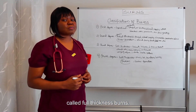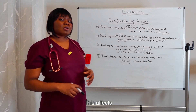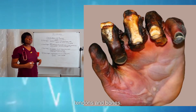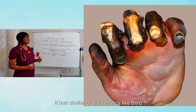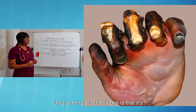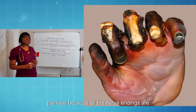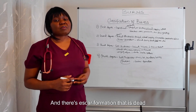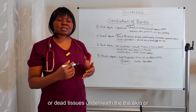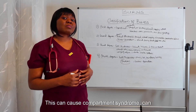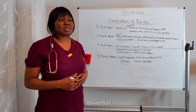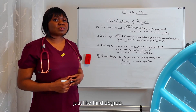Fourth degree burn is also called full thickness burn and is the worst of all. This affects the epidermis, the dermis, the subcutaneous tissue, and even up to muscle, tendons, and bones — very serious. It has similar characteristics to third degree burns: dry, waxy, leathery, and comes in various colors. The unique thing about this one is that it is painless because all the nerve endings are destroyed. There is eschar formation — that is dead skin or dead cells or dead tissues underneath the skin in the area where the injury has occurred. This can cause compartment syndrome and pressure in that area, so they may need surgical intervention. This of course requires skin grafting, just like third degree burns.